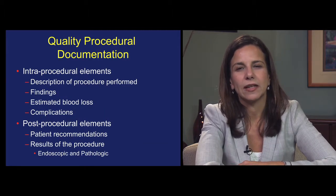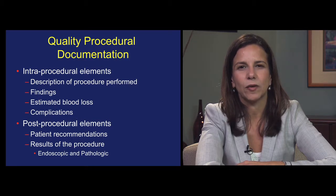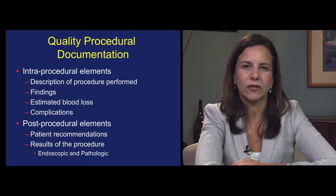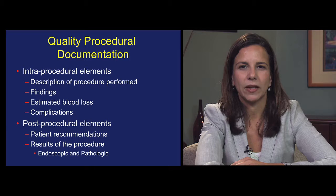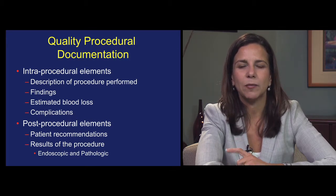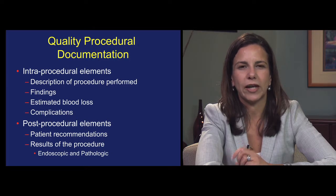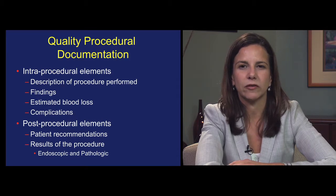Major interprocedural elements include a full description of the procedure performed, delineation of any findings with specific mention of anatomic landmarks, quantification of estimated blood loss, and note of any complications. Post-procedural elements that should be clearly documented to ensure reflection of the quality of the procedure include a cataloging of any patient recommendations post-procedure, as well as documentation of all results of the procedure and that those results were communicated. This would include both the endoscopic impressions at the time of the procedure and pathology results.